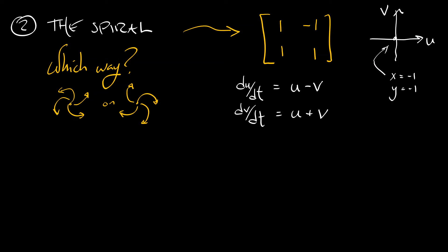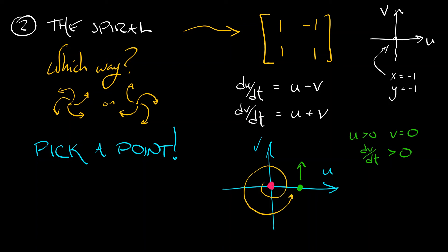We could try plotting the vector field, all kinds of things. Maybe the simplest thing to do is just pick a point. Pick a point in these local coordinates that is not at the equilibrium and see which way it points. Let's say I pick a point along the u-axis. So u is positive, v is zero. Substituting that into the linearized dynamics I get, the dv/dt is positive. That means that along that u-axis, the dynamics is pointed up. I know I'm spiraling out. That means I'm rotating in a counterclockwise fashion.